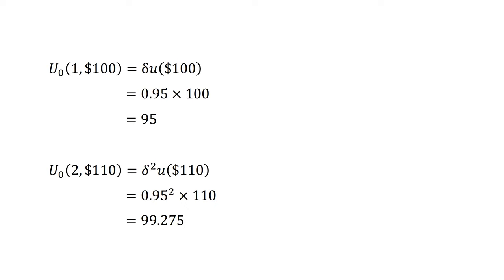The set of decisions across choice 1 and choice 2 are time consistent. If the agent selected $110 in two weeks for choice 2 and was given the chance to change their choice after one week, which is effectively choice 1, they would not change their decision.